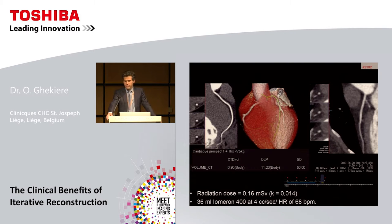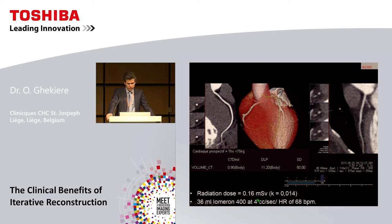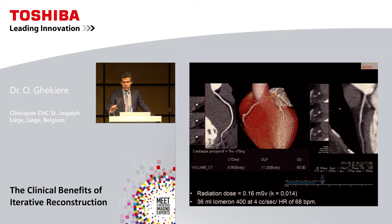Many presentations have shown very low radiation dose and low contrast medium use in many patients. In this patient, a 44-year-old woman, only 0.16 mSv was used with only 36 cc of contrast injected. But it is very important to also show more challenging cases — obese patients, patients with arrhythmia, and so on.